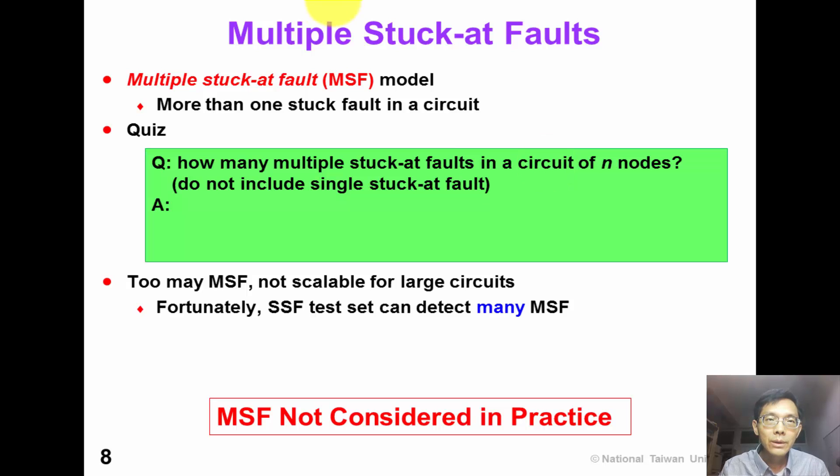You might wonder that we can have more than 1 stuck-at fault in a defective circuit. That's right. Multiple stuck-at fault model means that more than 1 signal is stuck at a logic value in a circuit. So how many multiple stuck-at faults we can possibly have in a circuit of n nodes? Please do not count the single stuck-at fault.